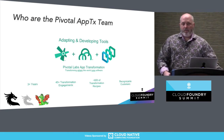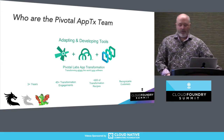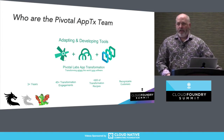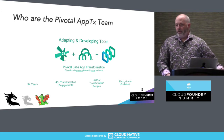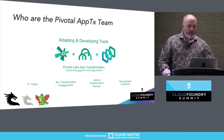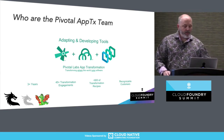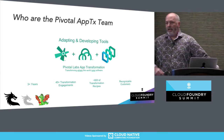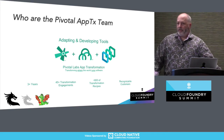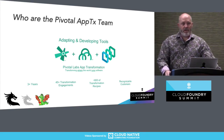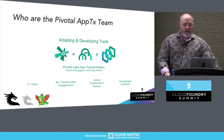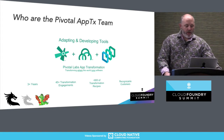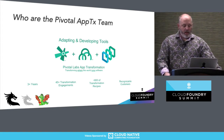So, who are the Pivotal App Transformation team? Basically, we are a group of 45, now 50, engineers who specialize in adapting and creating tools for transforming applications, especially monoliths and mission-critical applications to the cloud.